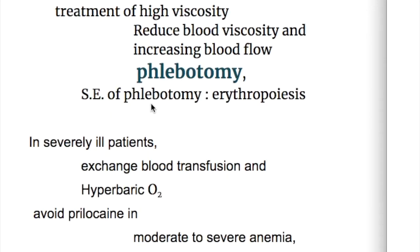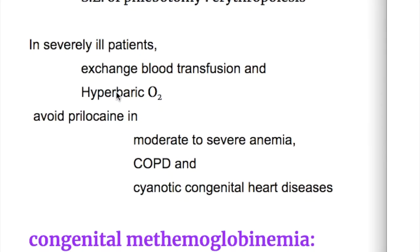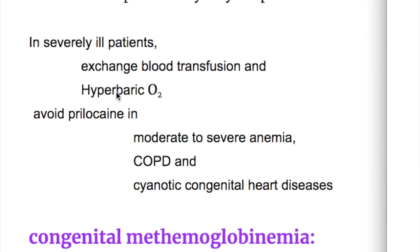Treatment of high viscosity aims to reduce blood viscosity and increase blood flow, and it is done by phlebotomy. The side effect of phlebotomy is increased erythropoiesis. In severely ill patients, IV methylene blue is given. Exchange blood transfusion may also be done, and hyperbaric oxygen is given.